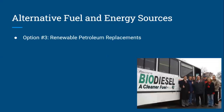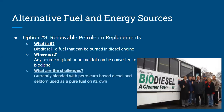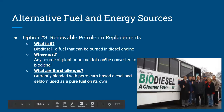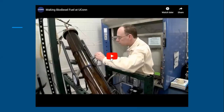Another option is renewable petroleum replacements, which includes biodiesel — a fuel that can be burned in a diesel engine. It can come from any plant or animal fat, which is then converted to biodiesel. Currently it is not used on its own; it's only used when blended with petroleum-based diesel. UConn has been doing this on campus — here is a picture of some of the staff at UConn, and I'll play a video for you.